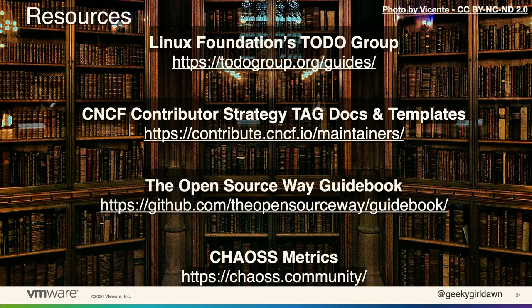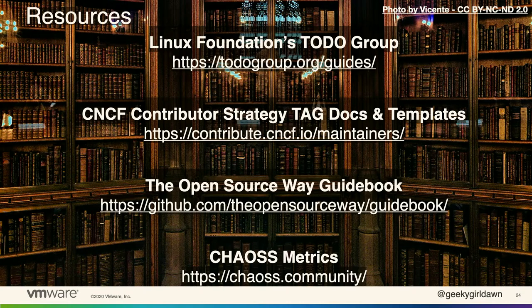Before I wrap up, let me leave you with a few resources you might find useful. The TODO Group has loads of guides with great information about all aspects of how companies work in open source projects. The CNCF Contributor Strategy TAG has a governance working group and a contributor growth working group, and we provide templates and guidance about contributor experience, contributor sustainability, governance, and other things to help people develop strategies for maintaining healthy projects. The Open Source Way guidebook has loads of details about building and maintaining open source projects, and the CHAOSS project has loads of metrics to help you measure open source project health and whether you're successfully achieving your strategies.